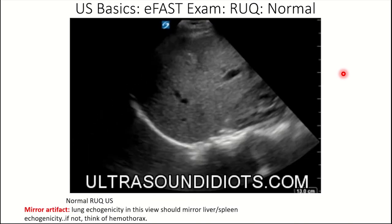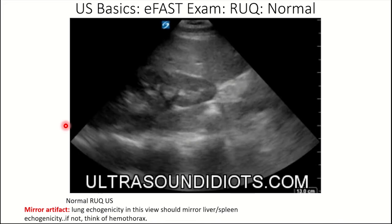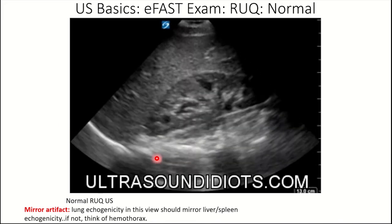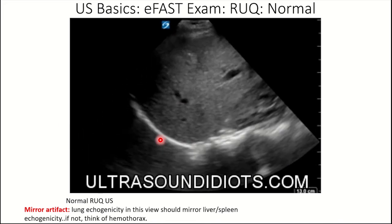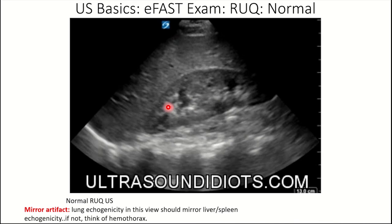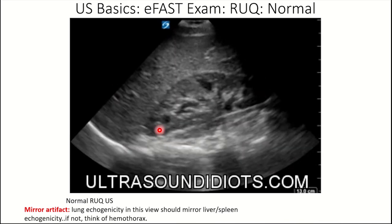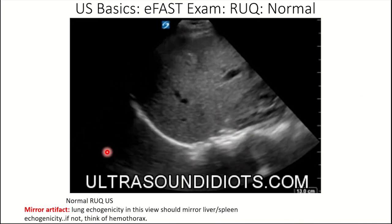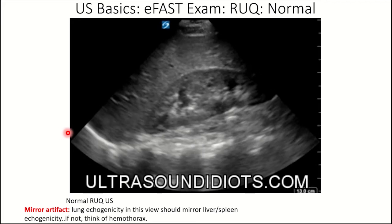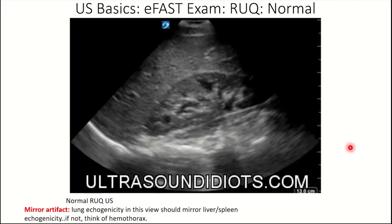Here is a normal RUQ image in motion. We can see the diaphragmatic stripe in white, the lung, the liver, the kidney, the hepatorenal space, and the inferior pole of the kidney. We also see the mirror artifact — the lung echogenicity should mirror the liver and spleen echogenicity. If it doesn't, think of hemothorax.